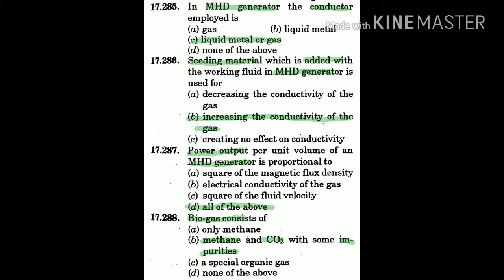Question 287: Power output per unit volume of an MHD generator is proportional to — the answer is D: all of the above, including A) square of the magnetic flux density, and B) electrical conductivity of the gas.